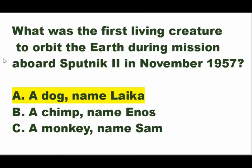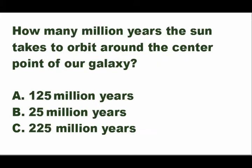Next question: how many million years does the sun take to orbit around the center point of our galaxy? Is it A — 125 million years, B — 25 million years, or C — 225 million years?